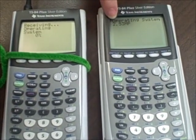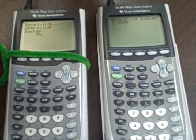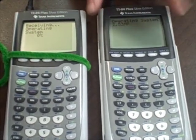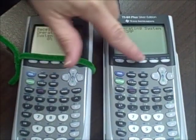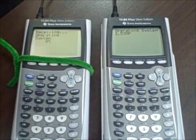Now you'll see I am sending 2.53 MP, which is math print. It's the one that makes fractions look like fractions, and you use the alpha y equals, alpha window and alpha zoom key for some extra things.